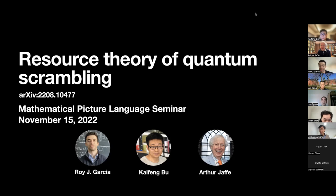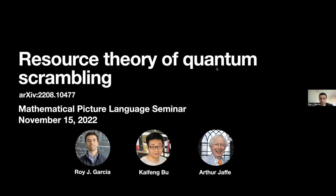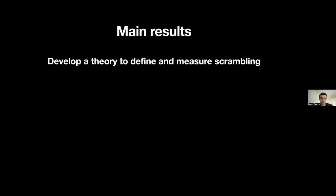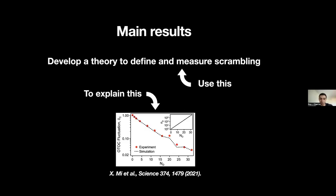Today I'm going to tell you about my group's recent work. This is work that I've done with my collaborator Kai Feng Bu, a postdoc in our group, and with my advisor Arthur Jaffe. We've developed a theory which can be used to define and measure this phenomenon called quantum scrambling, and then we use this theory to explain a recent scrambling experiment performed by Google.